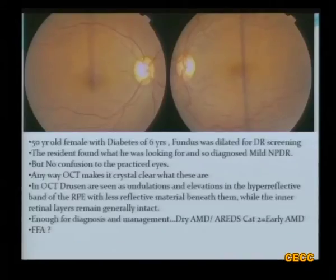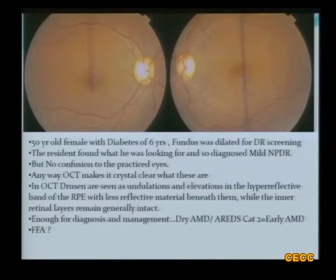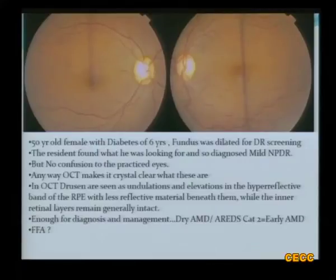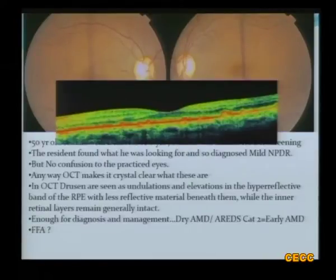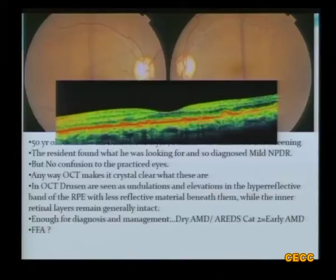Now this is a 50-year-old female with diabetes of 6 years whose fundus was dilated for routine diabetic retinopathy screening. Since the resident was looking for diabetic retinopathy, he found changes and diagnosed this as mild non-proliferative diabetic retinopathy, thinking they were hard exudates. But these are not hard exudates. If there is any doubt, you can look at the OCT and it will beautifully demonstrate the drusen as undulations and elevations of the hyperreflective band beneath the RPE with less reflective material beneath them, and the inner retinal layers are intact. This is a case of dry AMD — vision is 6/6 and you just need to follow the patient.